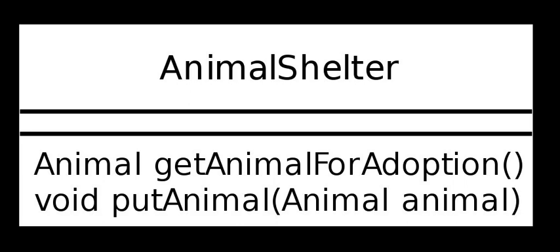In C#, if cat is a subtype of animal, then IEnumerable<cat> is a subtype of IEnumerable<animal>. The subtyping is preserved because IEnumerable is covariant on T. Action<animal> is a subtype of Action<cat>. The subtyping is reversed because Action is contravariant on T. Neither IList<cat> nor IList<animal> is a subtype of the other, because IList is invariant on T. The interfaces are declared as IEnumerable<out T>, Action<in T>, and IList<T>.